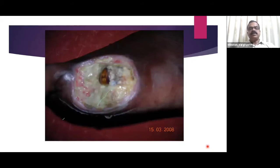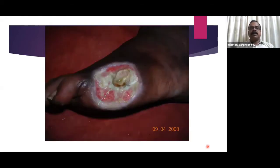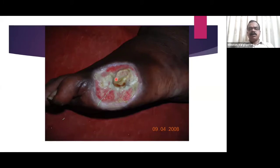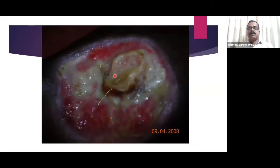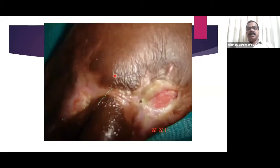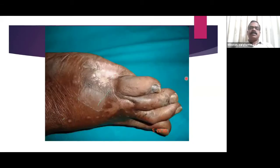Debridement was performed. The osteomyelitic bone was nibbled with the help of a surgeon, since necrotic bone would not allow healing. Remarkably, after homeopathic treatment, the surgeon noted that vascularity was adequate — a wonder given the initial near-total occlusion. The ulcer then healed progressively, as seen in the follow-up images.